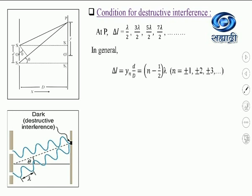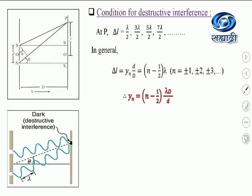In general, we can write the path difference between the waves for the nth dark point from the central bright point as delta L = (n − 1/2)·λ, where n takes the values ±1, ±2, ±3, and so on. Again, the ± sign indicates that the fringes lie on either side of the central bright fringe. For positive sign, fringes are on the upper side; for negative sign, fringes are on the lower side. From this condition, we obtain the general condition n minus half times lambda.